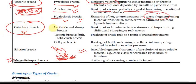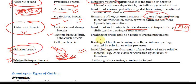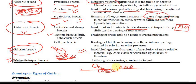Then we have cataclastic breccia — of tectonic origin — for example, from landslides, faults, or folds. Angular fragments are formed by tensile stresses or landslides, and after lithification they form landslide breccia. From tectonism such as faulting or crustal movements, we get tectonic breccia. Similarly, meteorite impact breccia is formed when a meteorite strikes, creating a crater; the surrounding rocks are shattered by shock into fragments, which are then deposited and lithified into meteorite breccia. Solution breccia occurs where limestone has soluble and insoluble parts — dissolution creates angular fragments that lithify into solution breccia.